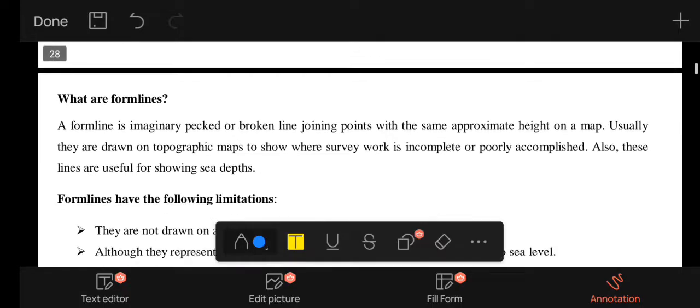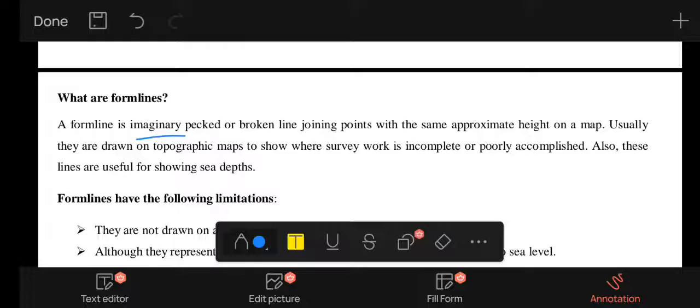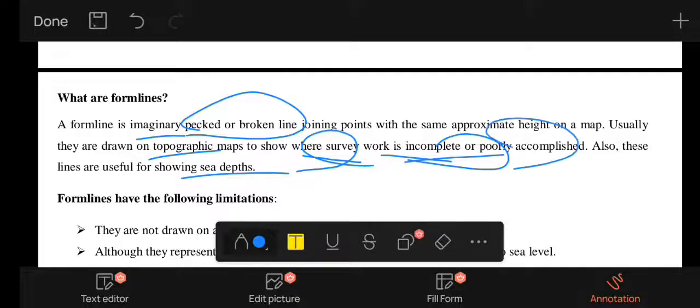Formlines are imaginary lines drawn with broken lines. They are drawn on maps usually to show where survey work is incomplete or poorly accomplished. These lines are useful for showing sea cliffs.